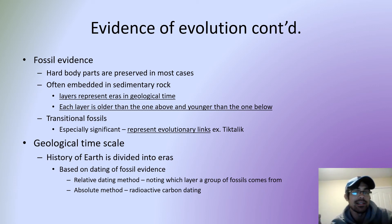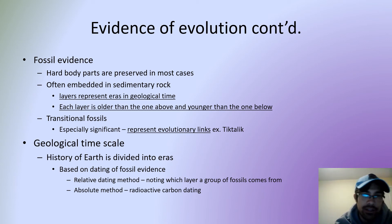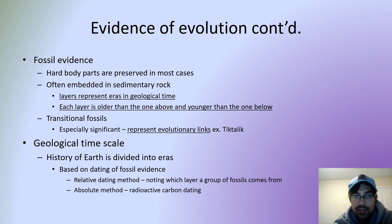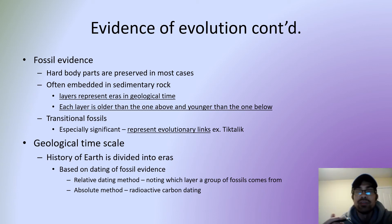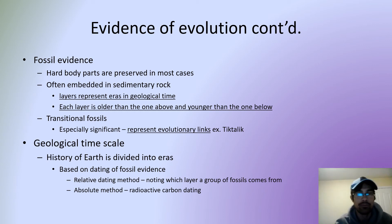There's also the geological time scale, which goes along with fossil evidence — different eras that help determine when organisms lived based on how deep the fossils are found. More recently there's carbon dating, where you analyze how much of the original carbon has decayed into a different form — the percentage of carbon remaining indicates how old the sample is.